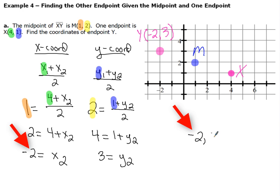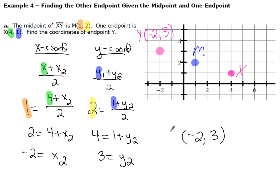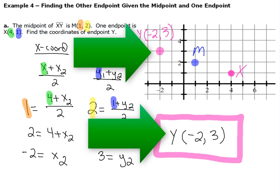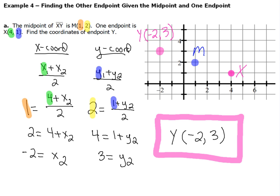So negative 2 is your x-coordinate — that comes first. 3 is the y-coordinate — that comes second. The coordinates for my other endpoint Y are (negative 2, 3). I want to compare the algebraic result with the graphical result: graphically I got negative 2, 3, and algebraically I also got negative 2, 3. Since both answers are the same, I did this problem correctly.